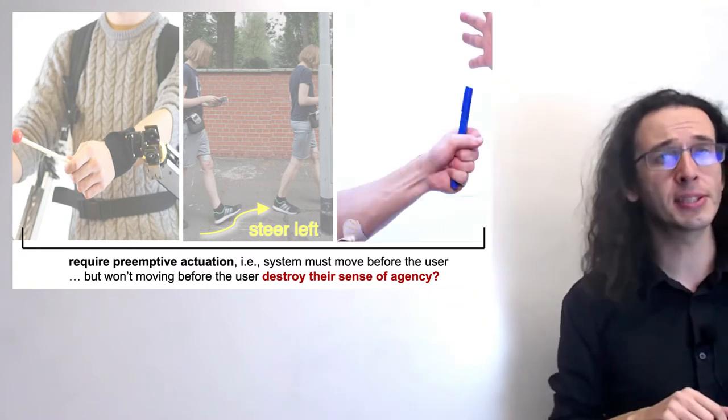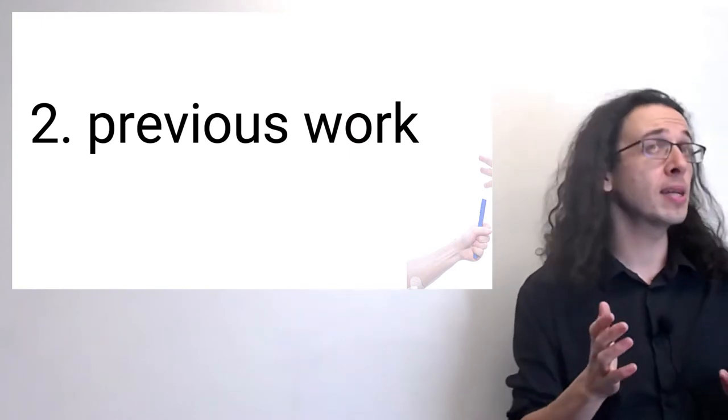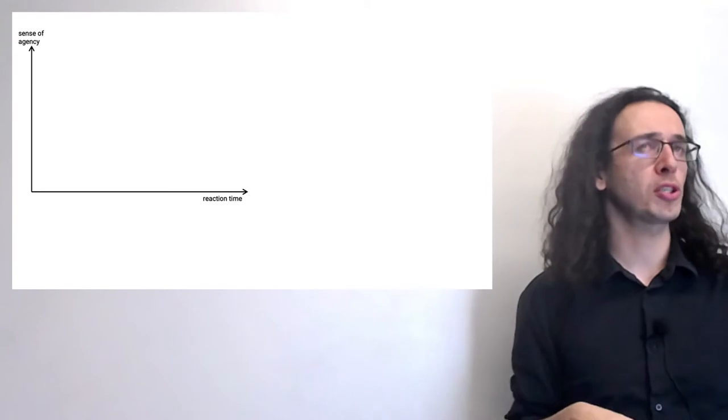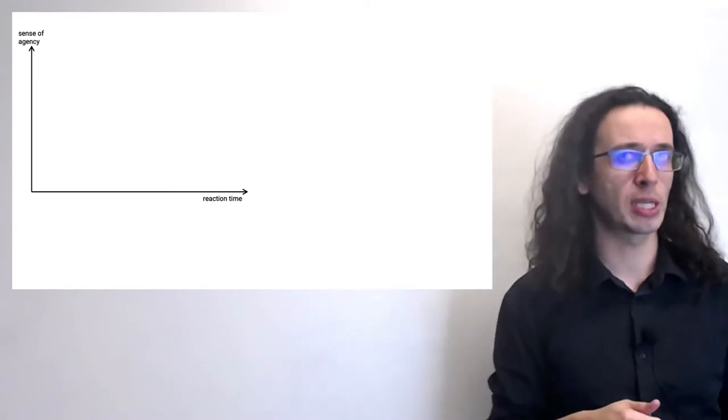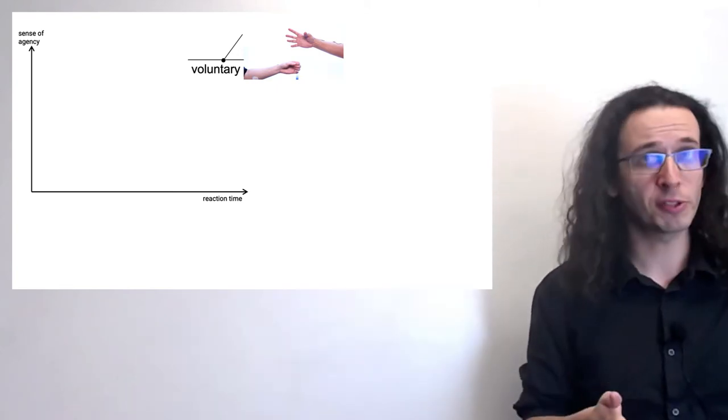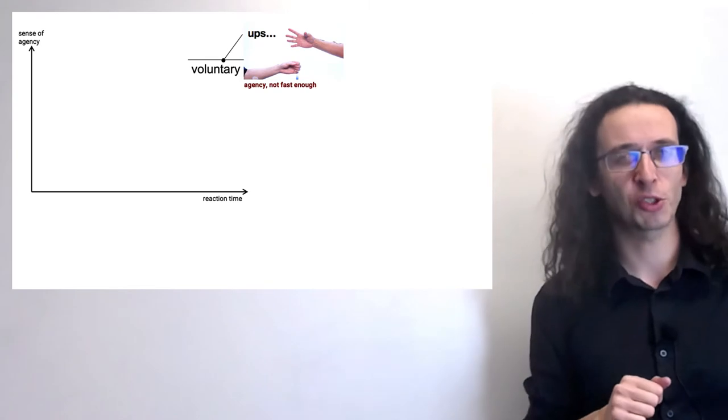This we think is one of the most important questions in HCI. In 2019, we started investigating this at the simple example of this falling object, in an attempt to understand the relationship between our sense of agency and a participant's sense of their own reaction time. As you would expect, if you try to catch this falling pen by yourself, you will certainly feel maximum agency. But you are probably not fast enough to catch it before it falls.